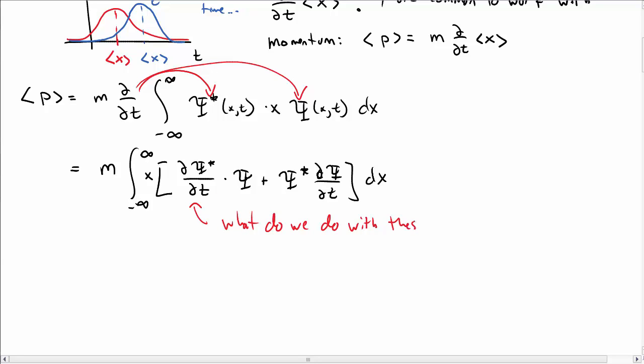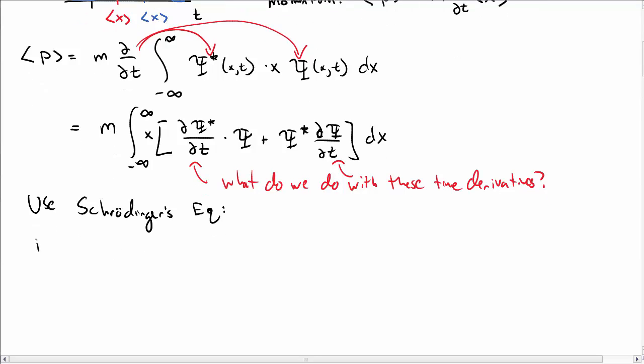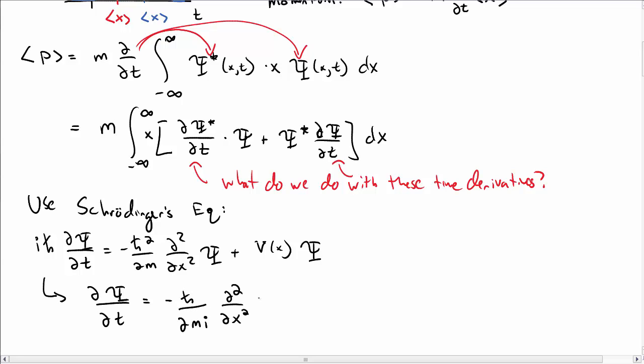What do we do with the derivative of psi star with respect to time and the derivative of psi? We can simplify them or get rid of them rather using Schrödinger's equation. Recall Schrödinger's equation involves a time derivative of psi that's equal to a second space derivative of psi plus v of x times psi. Let's solve for the time derivative of psi with respect to time. We get minus h-bar over 2mi d squared dx squared of psi plus v over i h-bar psi.